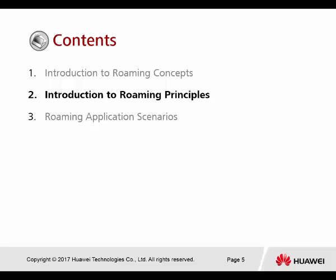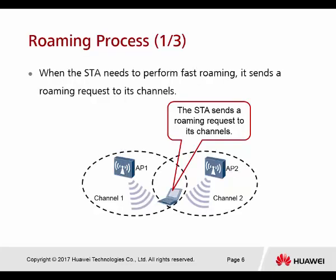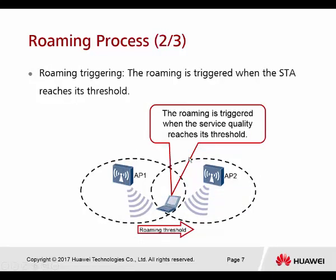Introduction to Roaming Principle. When the STA needs to perform fast Roaming, it sends a Roaming request on its current channel. The PC is currently connected to AP number one on channel one. Roaming is triggered when the STA reaches the signal quality threshold — when the signal becomes very weak and almost lost, the STA knows it has reached the threshold for the current AP.